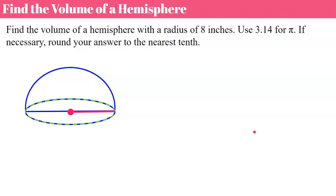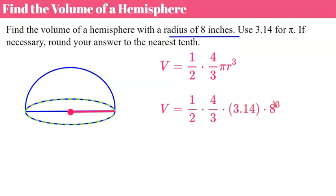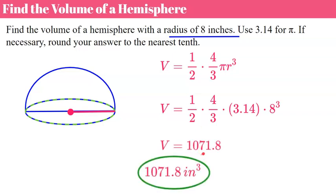Now let's find the volume of a hemisphere with radius 8. We use the sphere formula multiplied by one-half. On the calculator: 8 times 8 times 8, times 3.14, times four, divide by three, then divide by two — because we want half of that. You should get 1,071.8 inches cubed.